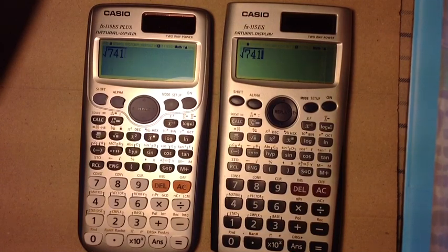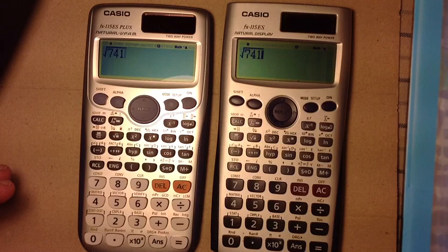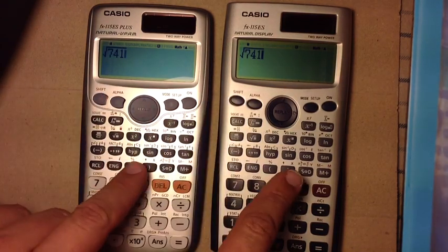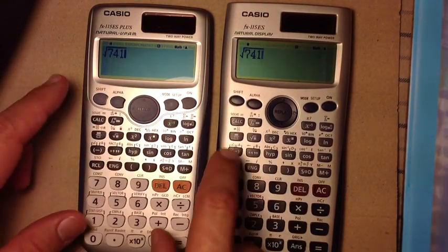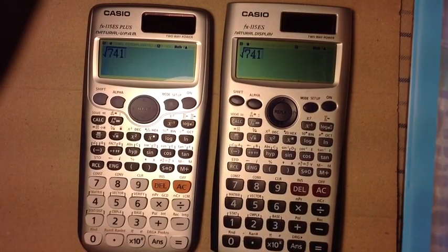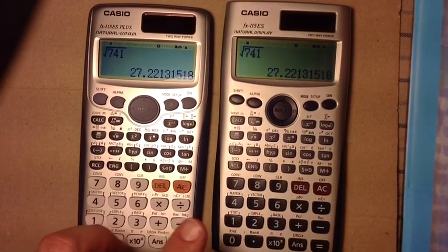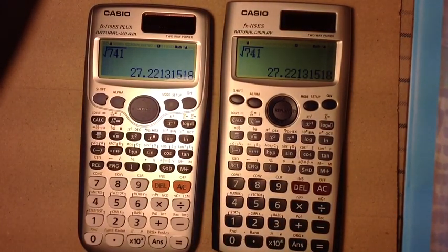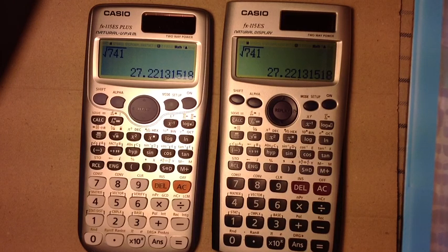So, if I wanted to take the square root of 741, but I want a decimal approximation, without having to press the SD key, I can go shift and then equals, and it works for both models.